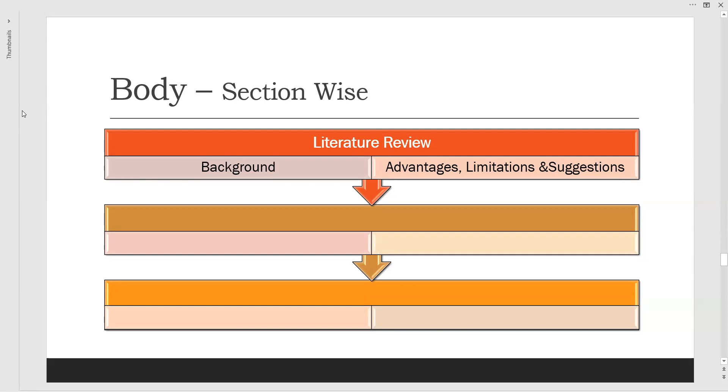Next step embodies methodology means what type of methods that have been used to solve the problem in our research work. These methods can be very first, it might be existing method or it might be here. Existing method means what are the previous methods that have been used to solve the same problem. But while showing the existing methods, we should keep in mind that what are the limitations that have been arrived at in the existing procedures.